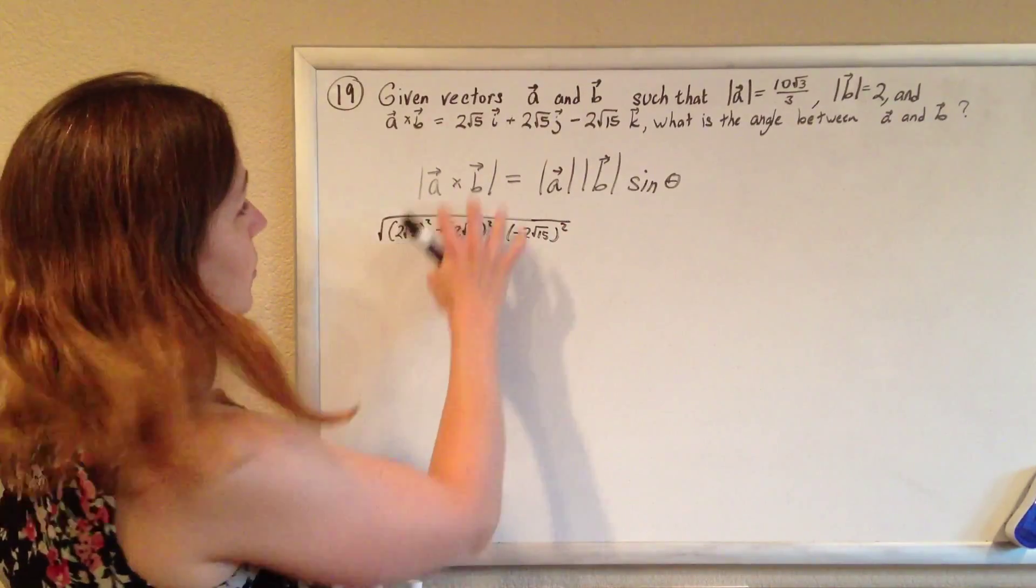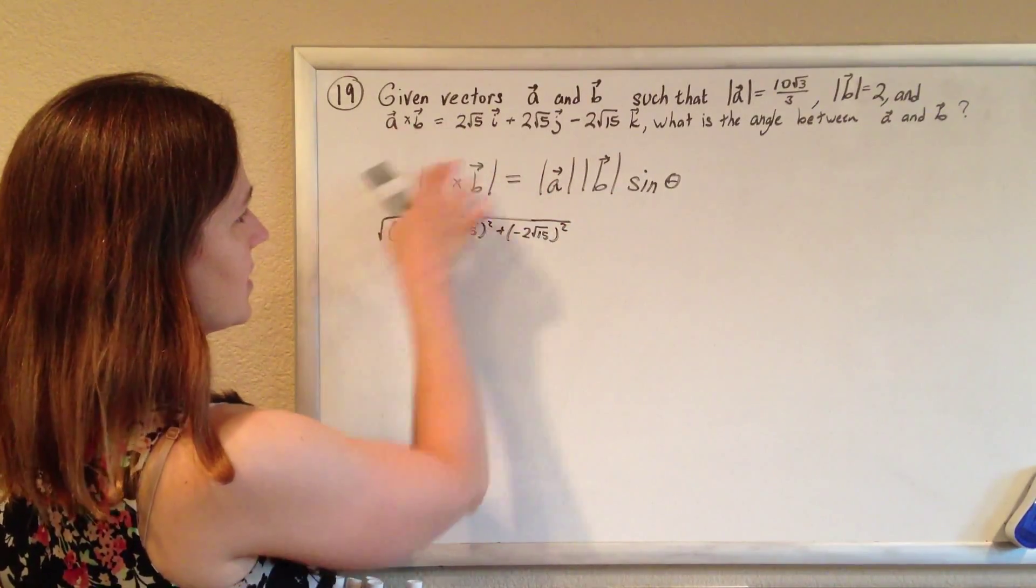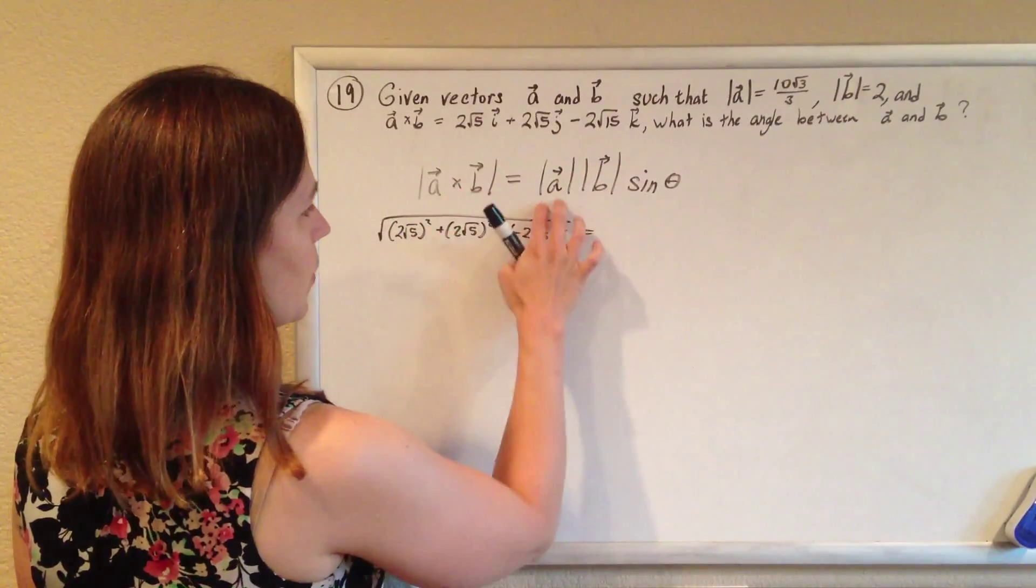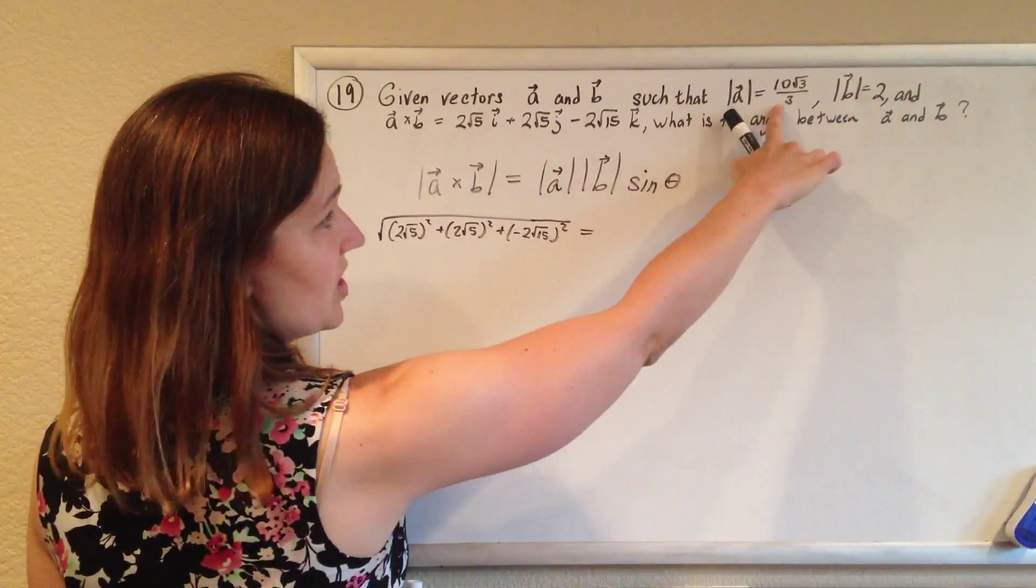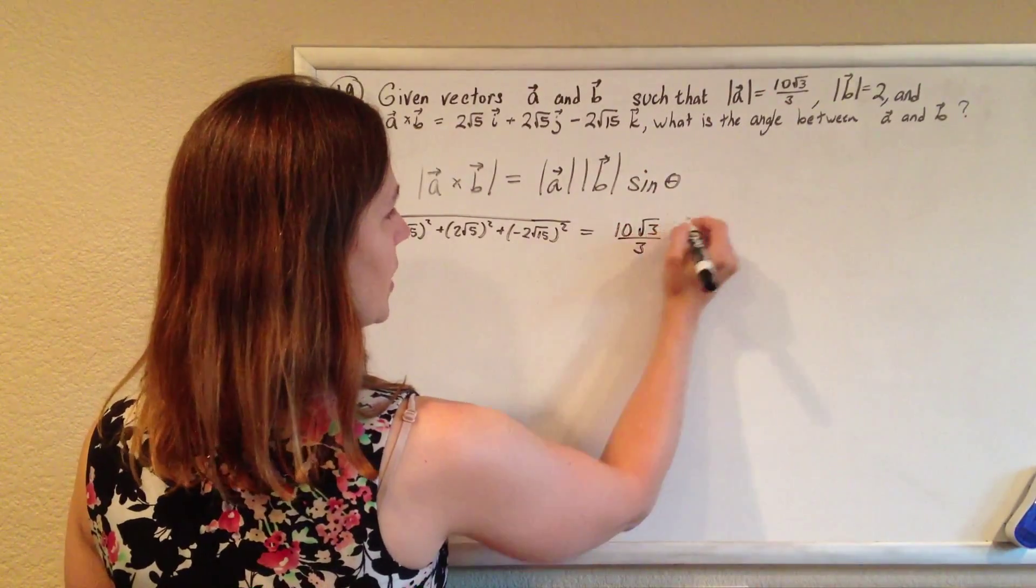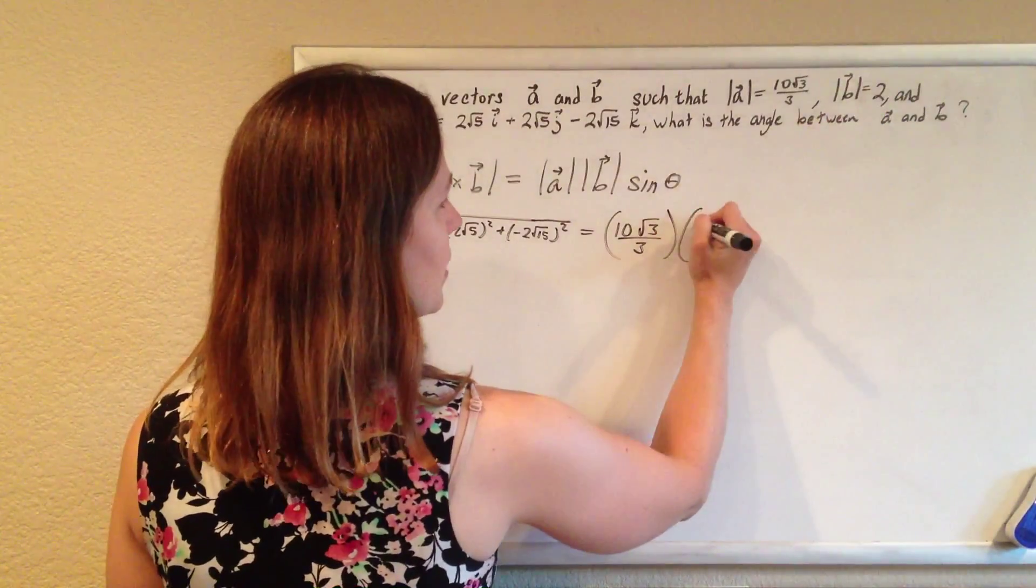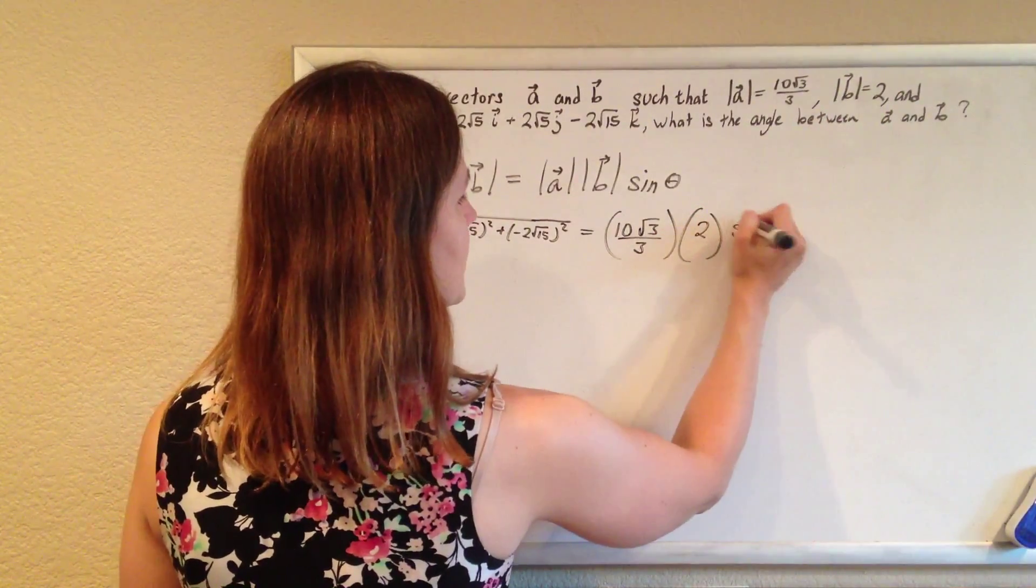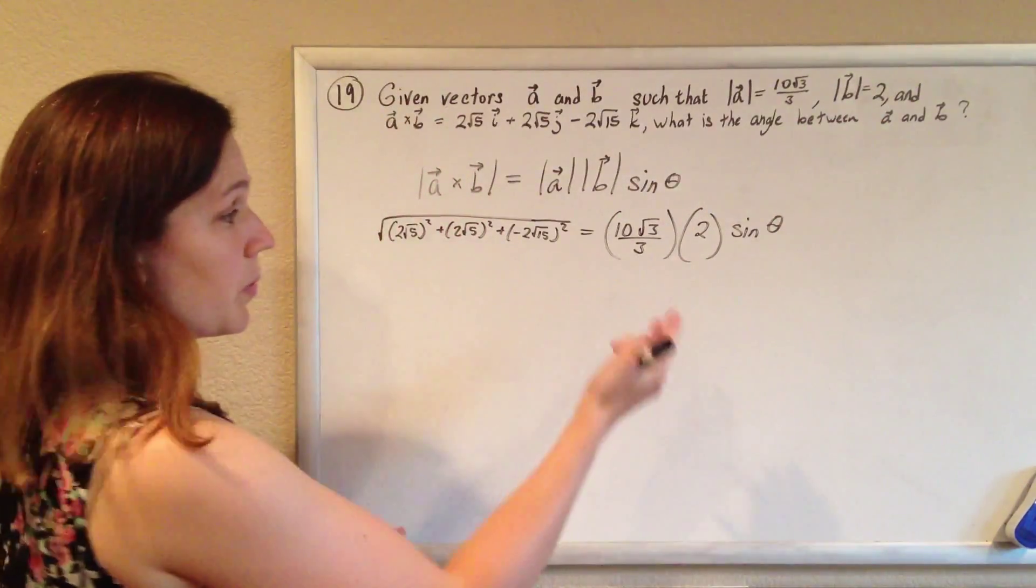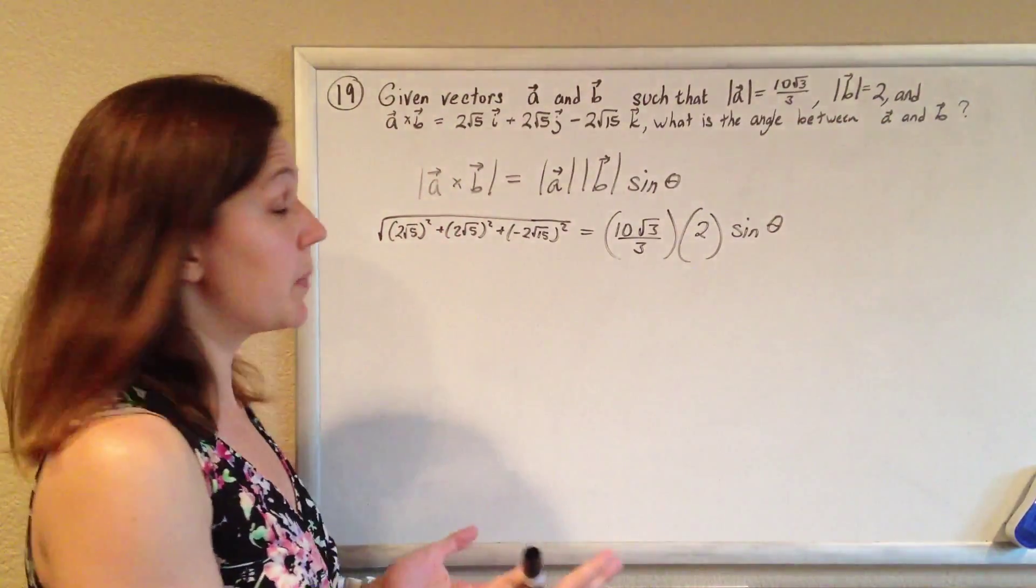So that will be the magnitude of this vector, and this is supposed to equal the magnitude of A, which they just tell us straight up is 10 root 3 over 3, times the magnitude of B, which is straight up 2, times the sine of the angle between the vectors, which is what we want to know. So it's a straight plug and chug.